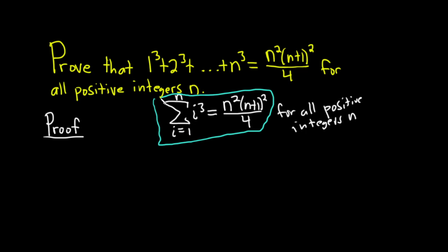I'm going to give it a name — I'll call it S for statement with a subscript of n. We're basically showing that S sub n is true for all positive integers n. That's what induction does: it allows you to prove statements about integers. So the first step in an induction proof is the base case.